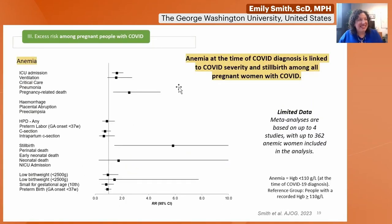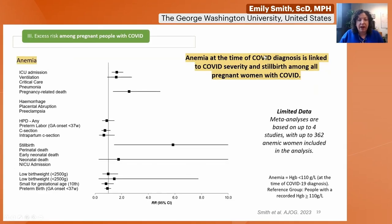Anemia at the time of COVID diagnosis was also linked to COVID severity and stillbirth among pregnant women with COVID. This is another important risk factor to consider, particularly for women with undernutrition, depending on the patient population you see in practice.